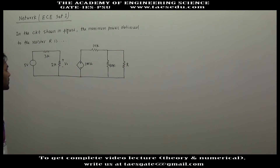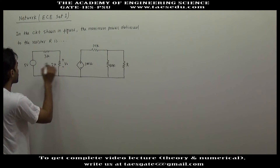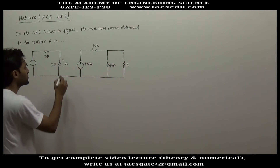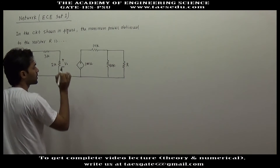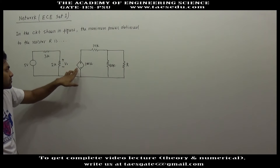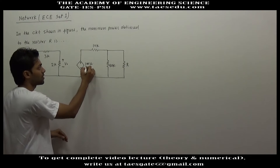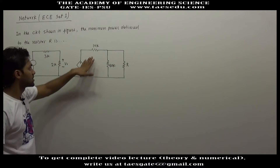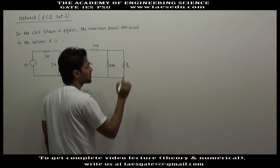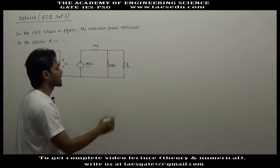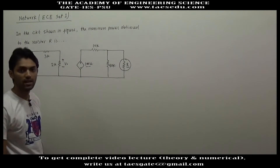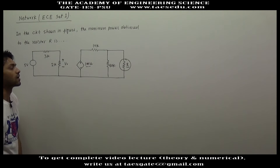Here we have a circuit diagram with a 5 volt voltage source, a 3 kΩ resistance, and a 2 kΩ resistance. The voltage here is V0 and there is a voltage-dependent voltage source. If the voltage here is V0, the dependent source voltage will be 100 times V0. There is also a 10 kΩ, a 40 kΩ, and a resistance R. We have to find out the maximum power that can be delivered to resistance R.